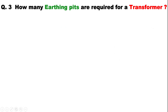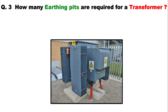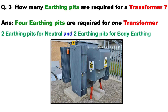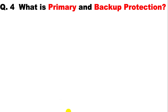This question can also be asked in a different manner: for a distribution transformer, how many earthing pits are required? The answer is the same — for a distribution transformer also, four earthing pits are required: two earthing pits for neutral and two earthing pits for body earthing.